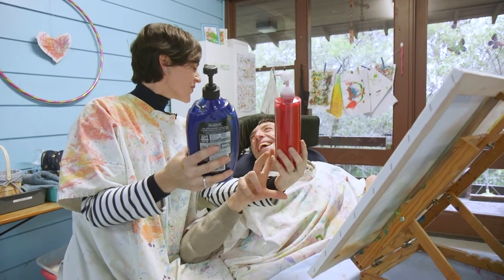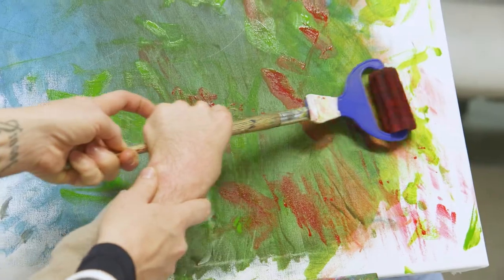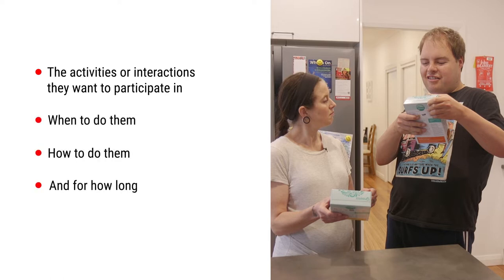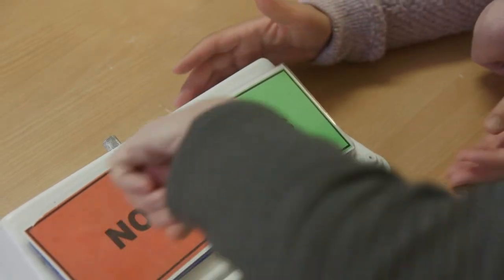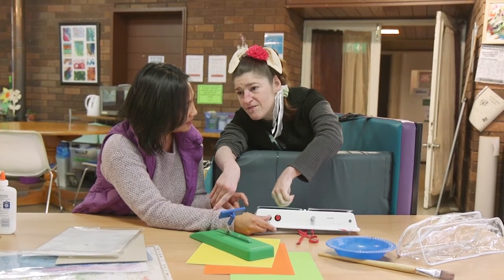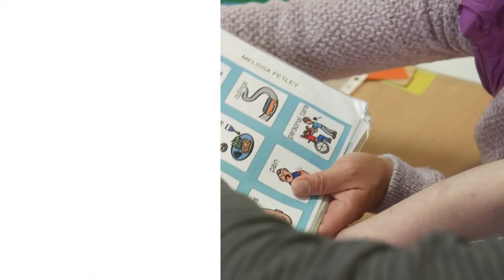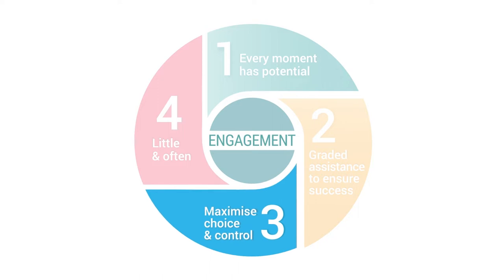The people you support also have preferences and can make choices. They can make choices about the activities or interactions they want to participate in, when to do them, how to do them and for how long. You need to provide them with opportunities to express their preferences and make choices. This essential of active support is maximising choice and control.